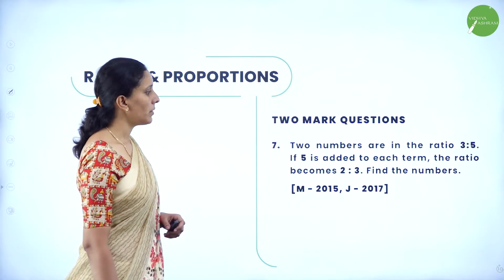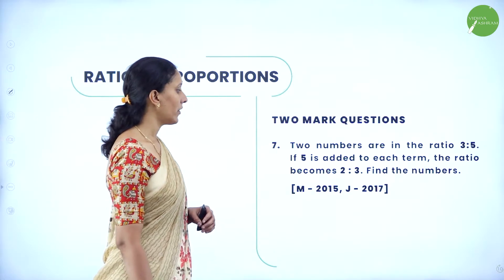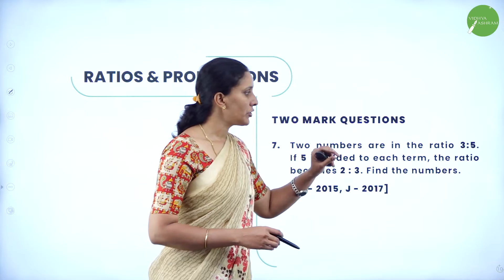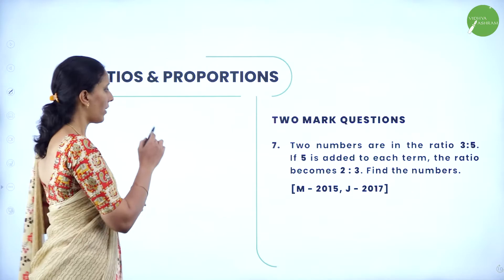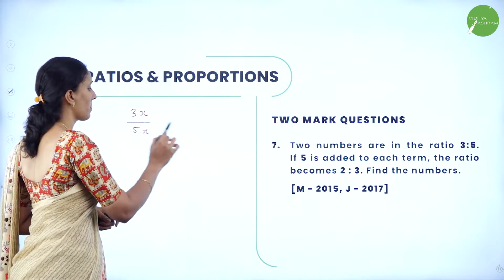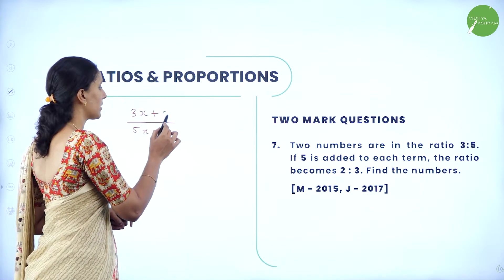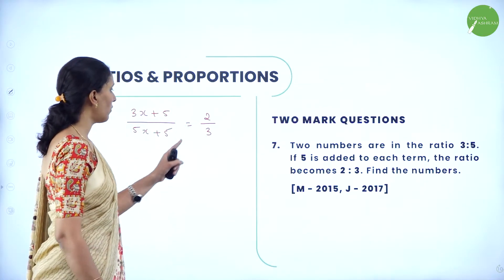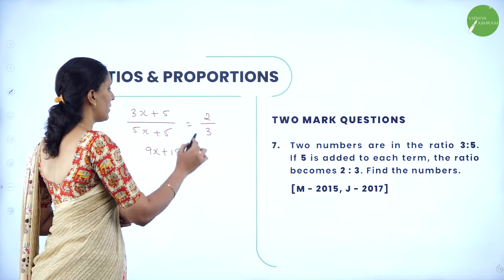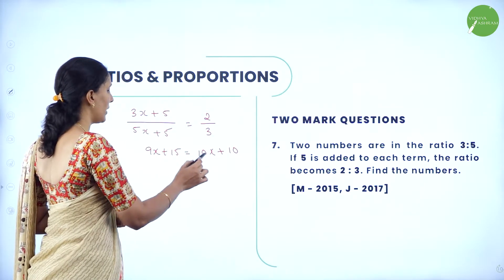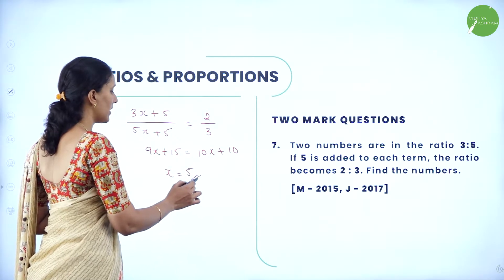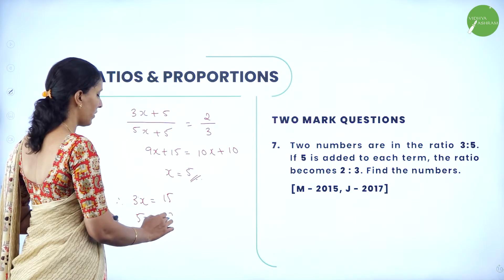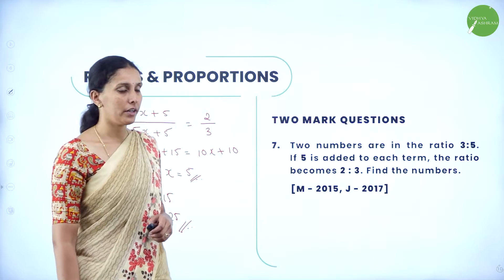Now let's look at two-mark questions. Two numbers are in the ratio 3 is to 5. If 5 is added to each term, the ratio becomes 2 is to 3. Find the numbers. Let the numbers be 3x and 5x. When 5 is added to each term: (3x+5)/(5x+5) = 2/3. Cross-multiplying: 9x + 15 = 10x + 10, so x = 5. Therefore the numbers are 3×5 = 15 and 5×5 = 25.